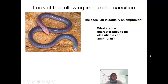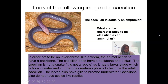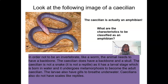Now, look at the caecilian — it is actually an amphibian. The caecilian does have a backbone and a skull, so it is not an invertebrate like a worm. It is not a snake or a reptile. It has a larval stage born in water and undergoes metamorphosis to become the adult caecilian. The larvae have gills to breathe underwater, and caecilians do not have scales like reptiles.